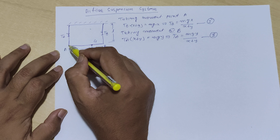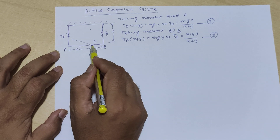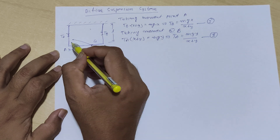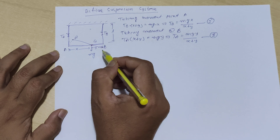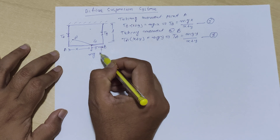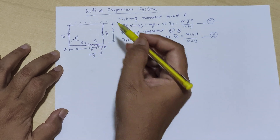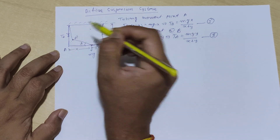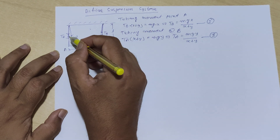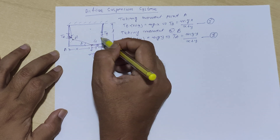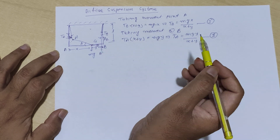Now we are going to give a displacement to this plate. The newer position — let us assume it is going somewhere like this. So A is now reaching to A-dash and B is reaching to B-dash. Let us say this displacement angle is theta. The string is still there, and now there will be some angle in this plane.